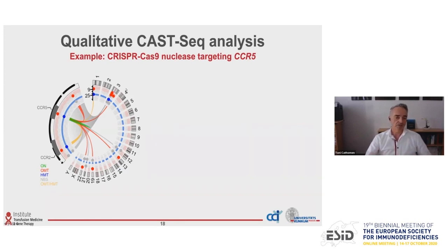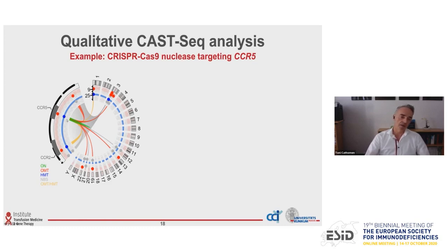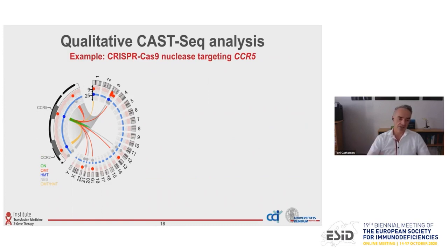This is a typical circus plot we draw after getting results from our bioinformaticians. These are chromosomes 1 to 22, followed by X and Y. Our target in this case is CCR5 on chromosome 3. Lines link CCR5 with off-target sites on different chromosomes — these are all sites of translocation. We can see translocations between chromosome 3 and 13, between 3 and 19, between 3 and 22, and between 3 and 1. There is also quite a bit of noise around the on-target site, indicating large insertions, deletions, or inversions.